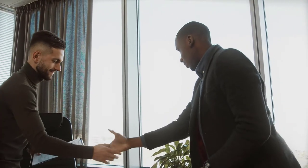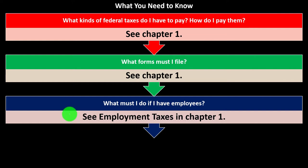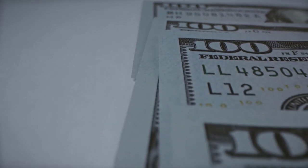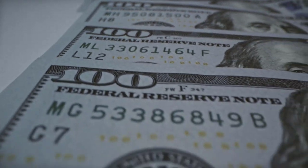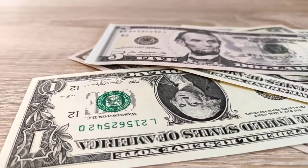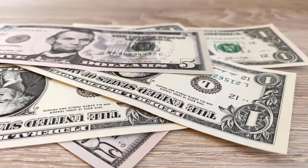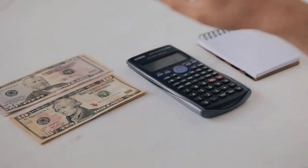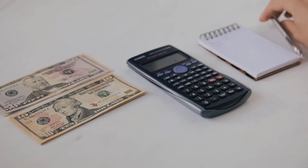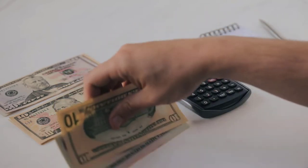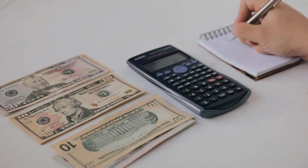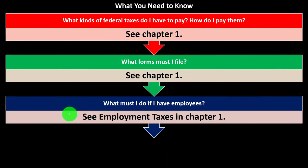Hiring employees adds complications: you have to manage payroll taxes, similar to any business such as a C corporation. You also need to consider what you can deduct on the Schedule C for your employees. It gets a bit confusing distinguishing payroll taxes paid to employees versus the self-employment tax you pay on yourself, since you're not actually paying yourself as an employee of the sole proprietorship.